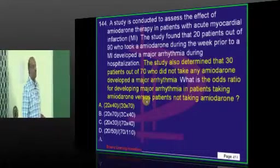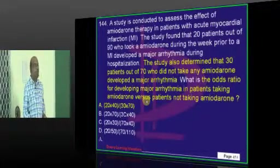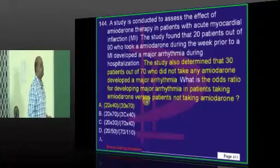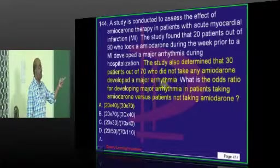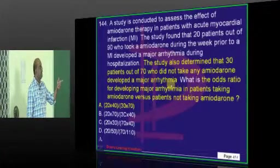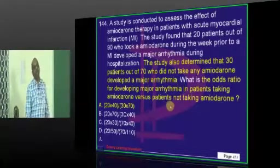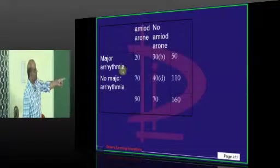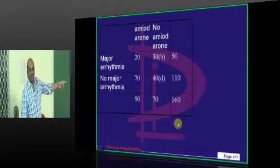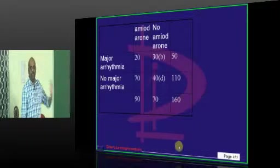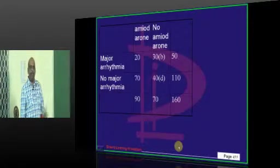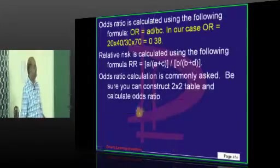Now doctor, a study is conducted. Thirty patients out of seventy who did not take amiodarone had arrhythmia. What is the odds ratio? AD/BC. You have to calculate. For that, you must know how to put the 2x2 table. You can calculate anything basically.